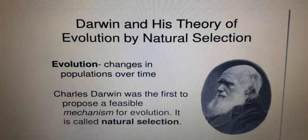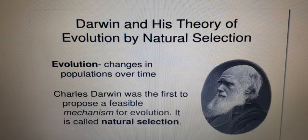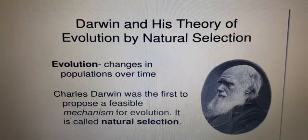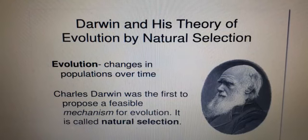Charles Darwin had collected innumerable specimens of plants and animals, and depending upon the observations of those specimens, he published the Theory of Natural Selection, which preaches the survival of the fittest. For this purpose, Darwin published a book titled Origin of Species.